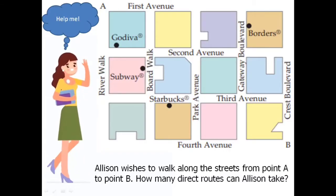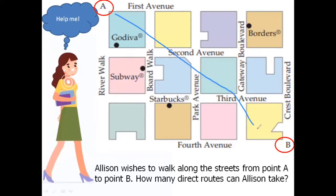First, we're going to label the start point and the finish point that Allison will take. So these are A and she will go to point B. Now, how many direct routes can Allison take from point A to point B?